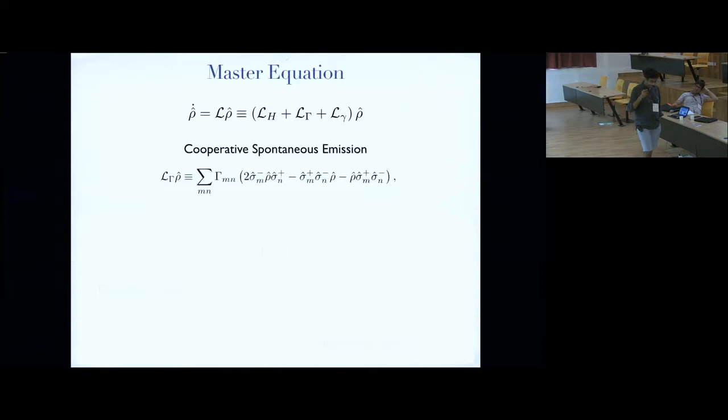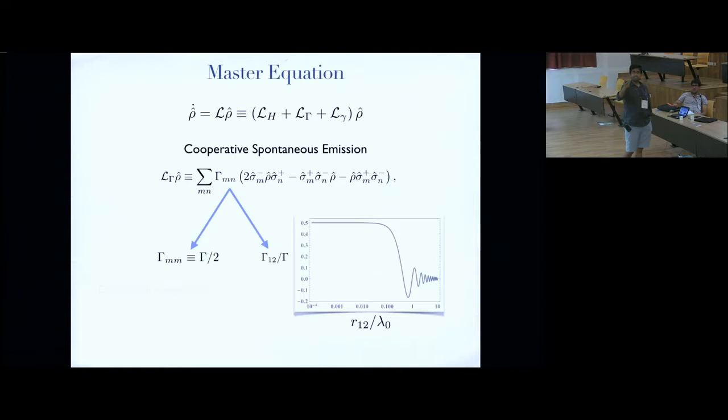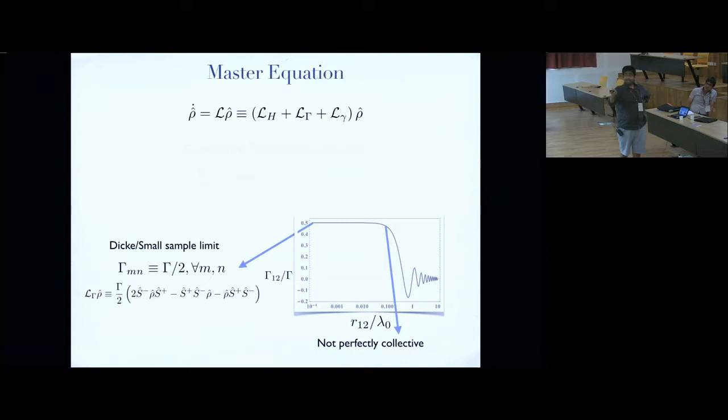Let's now go to the dissipative process, which is called as cooperative spontaneous emission. This is how the dissipator looks. M and N denote the different emitters. When you consider terms with M equal to N, what you get is the usual spontaneous emission dissipating operator. The interesting thing is in this case, you also have correlated emission processes for M not equal to N, which, just like the dipole-dipole interaction, depend very crucially on the separation between the emitters. And as you can see clearly, once you are in this regime where the emitters are very, very closely packed in units of the wavelength, the off-diagonal term also saturates exactly to the diagonal contribution, and you can write the total dissipator in terms of just the collective operators. So this is just collective emission, and this is what lies at the heart of superradiance, as I described in the beginning.